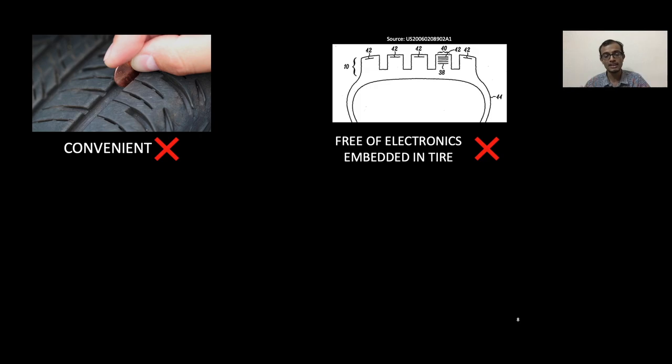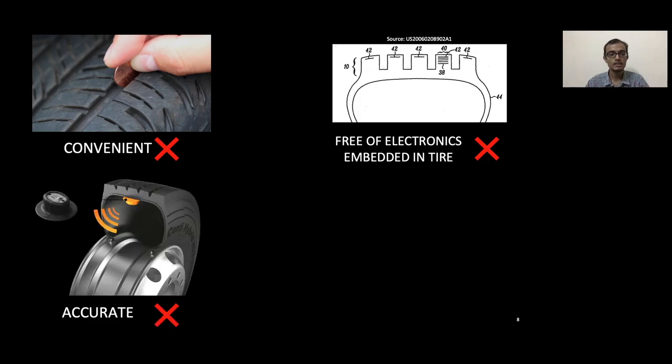There are other solutions which the industry is rallying behind and calling smart tire solutions. This is basically a tire pressure sensor and a bunch of dynamical models built around it to indirectly tell what the tire wear is. Of course, the accuracy of these are just limited by the ability of the models.